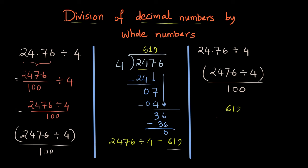Now we want to divide it by 100, and once we divide 619 by 100, we get the answer as 6.19.